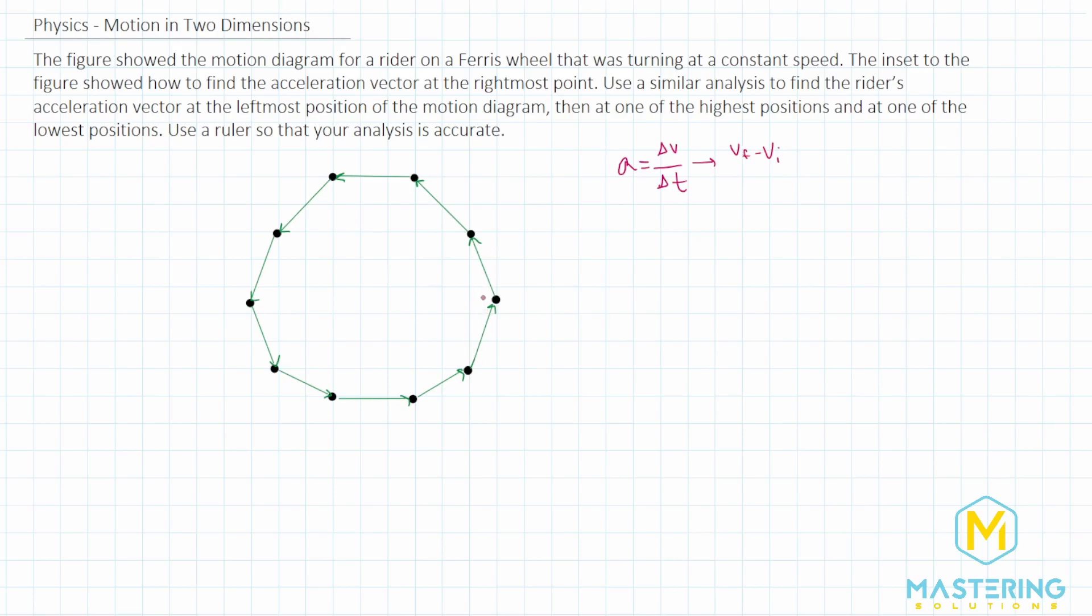But whenever you subtract a vector, you take the one that you're subtracting by and you flip it backwards, and then you go tip to tail, and then you find the resultant vector. So this one, let's take it and we'll turn it backwards. And now we'll slide it up here, and we'll keep the exact same orientation like that.